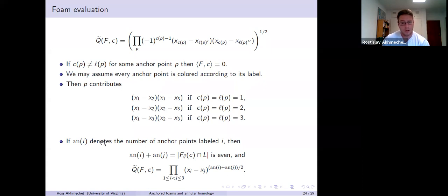We'll let N of I denote the number of anchor points labeled I. This is independent of the coloring. Then N_I plus N_J is equal to the number of intersection points of this surface F_IJ with the line. F_IJ is closed. This is necessarily even. And you can rewrite this Q tilde in this form, taking the square root in the natural way. And this is assuming the condition that the color equals the label for every anchor point. Then you can write Q tilde in this way. Otherwise, the evaluation is just zero because you have something like X of two minus X of two.